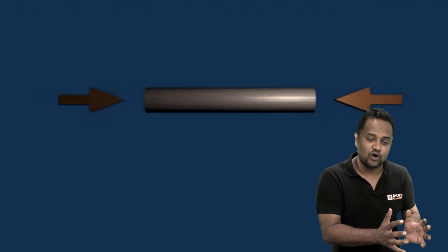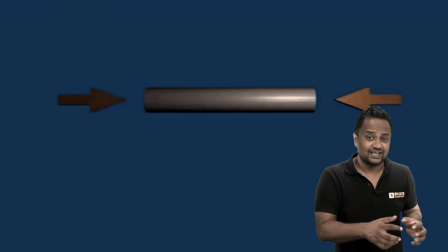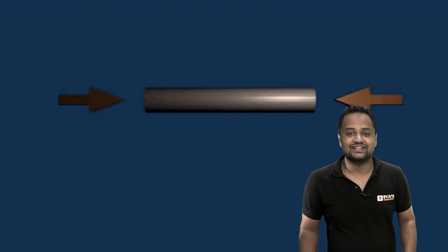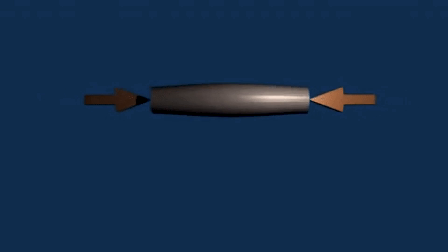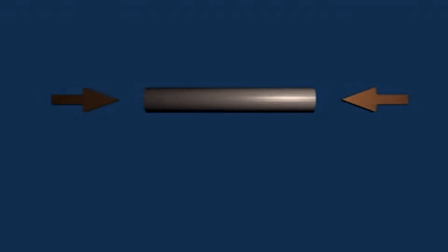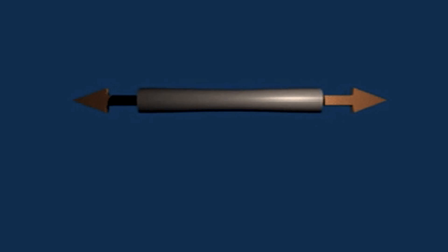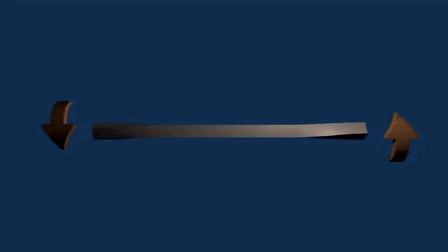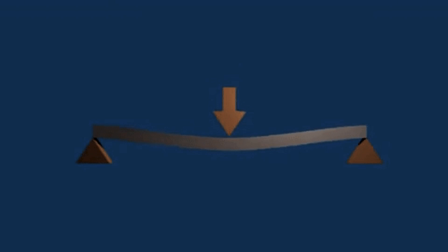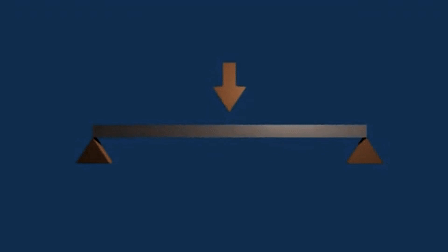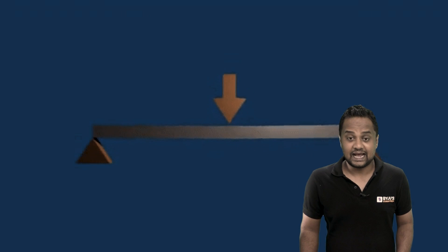In deformable physics and strength of materials, we study the compression effect. When a compressive force is applied, the length decreases. When a tensile force is applied, the length increases. When a torque is applied, there is a twist in the body. In a beam, due to various forces, there is deflection and slope — these are the things we find in strength of materials.